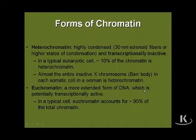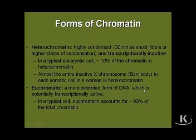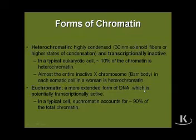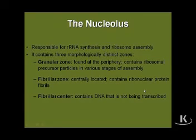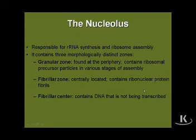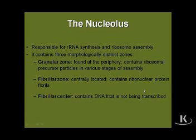Chromatin is either in the form of heterochromatin, which is transcriptionally inactive, constituting about 10% of the chromatin in a typical eukaryotic cell, or it's euchromatin, which is a more extended and active form, accounting for about 90% of the total chromatin in a typical protein-producing cell. The nucleolus, which we alluded to earlier in the electron micrograph, is responsible for ribosomal RNA synthesis and ribosomal assembly. There are morphologically distinct zones: the granular zone and the fibrillar zone are the active zones, while the fibrillar center — the actual central portion of the nucleolus — is inactive, containing DNA that's not being actively transcribed.